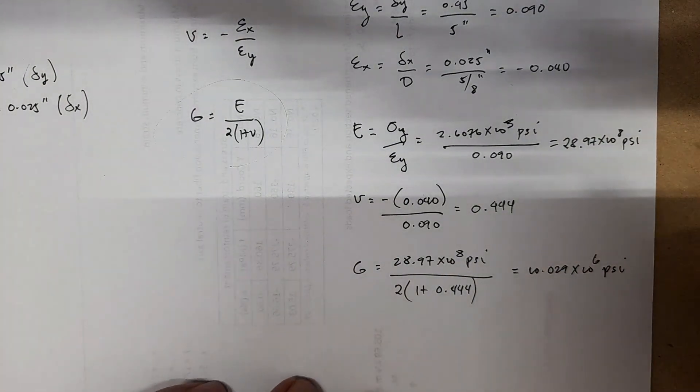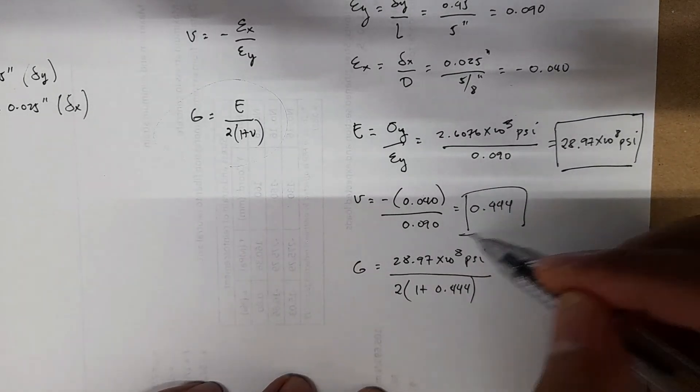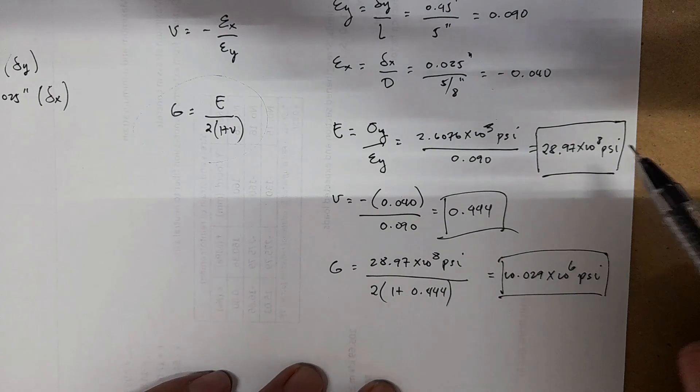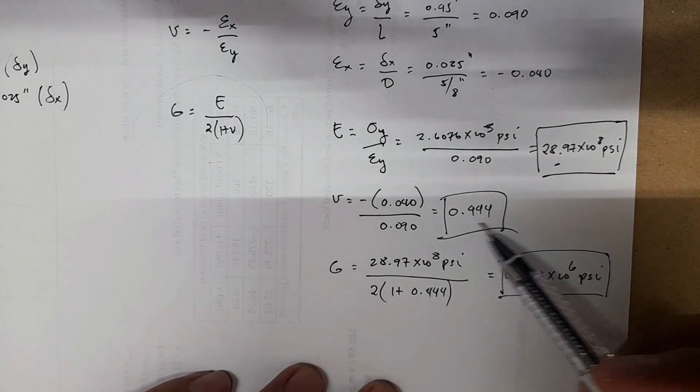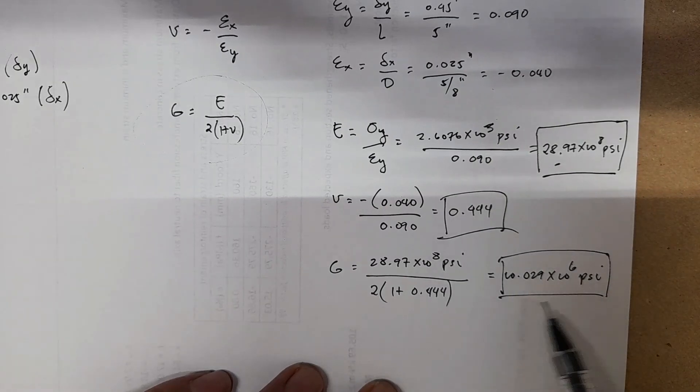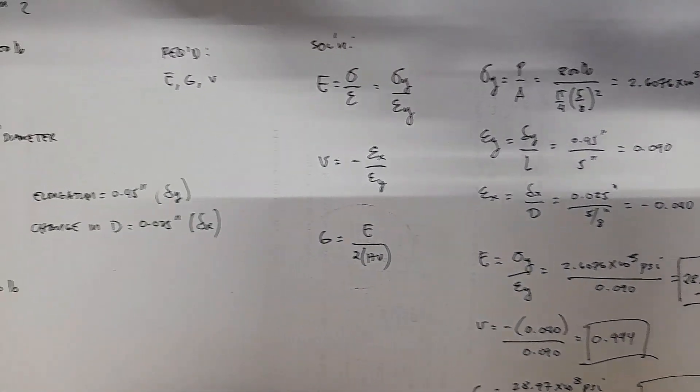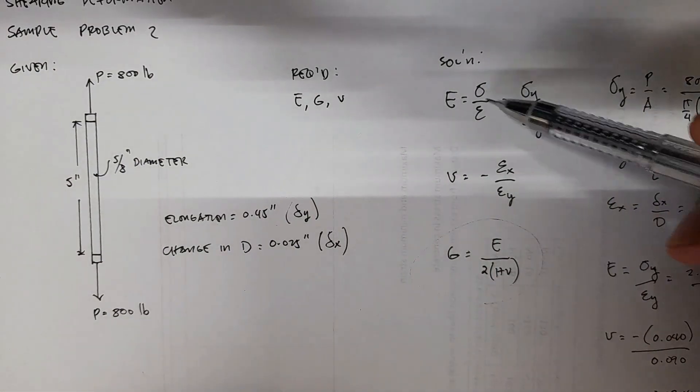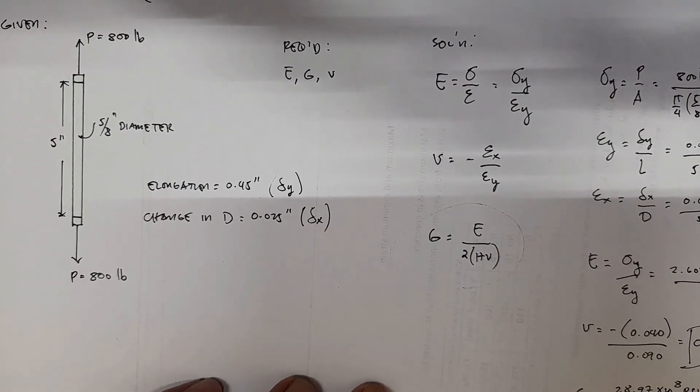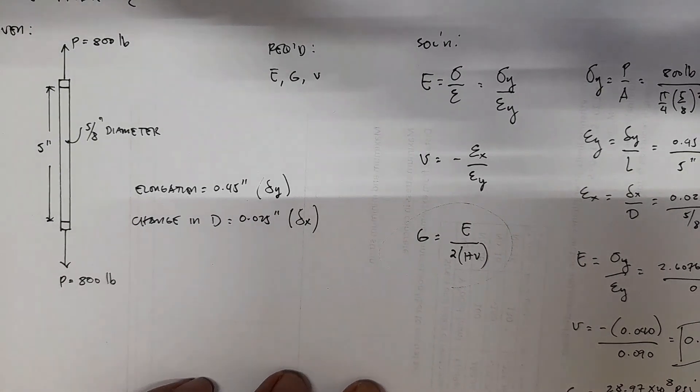So now you have your answers: you have E, v, and G. You can say this is 29 times 10 to the 3 psi, 0.444, and 10.03 times 10 to the 3 psi. This just made use of these equations to solve for the three required values.